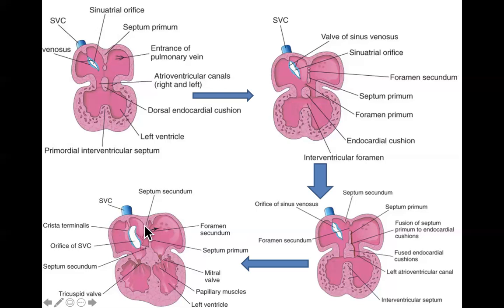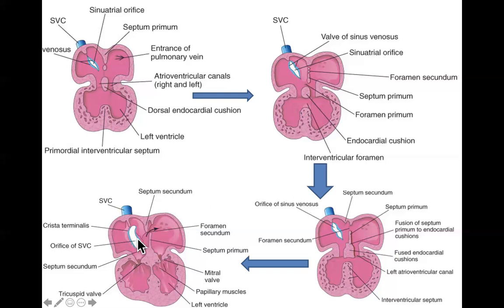The foramen ovale allows blood to flow from the right atrium into the left atrium. This matters because all the blood coming in from the lungs is unoxygenated - the lungs are not providing any oxygen at this point. The blood coming in from the umbilical vein through the inferior vena cava is highly oxygenated, so the foramen ovale is the only way to get oxygenated blood into the right atrium and then into the left atrium, then into the left ventricle and out to the rest of the body.